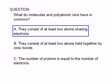Choice B is wrong. Atoms sharing electrons are said to be held together by covalent bonds, not ionic bonds.